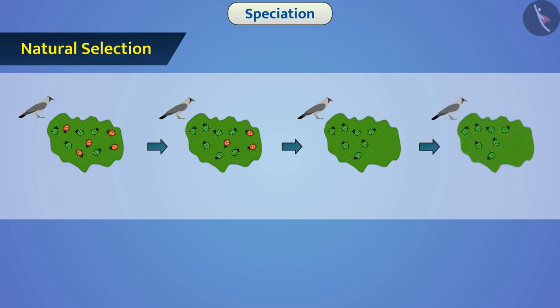Those organisms which do not have favorable adaptation get slowly eliminated. Those who survive transfer these beneficial traits to their offspring. Due to accumulation of such changes over generations, the population of organism evolves.